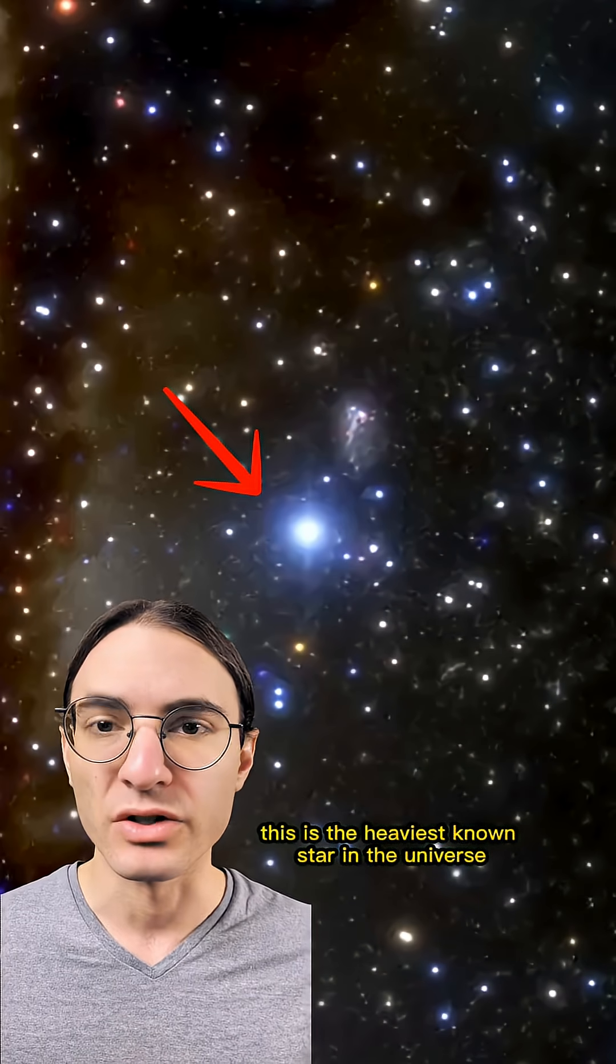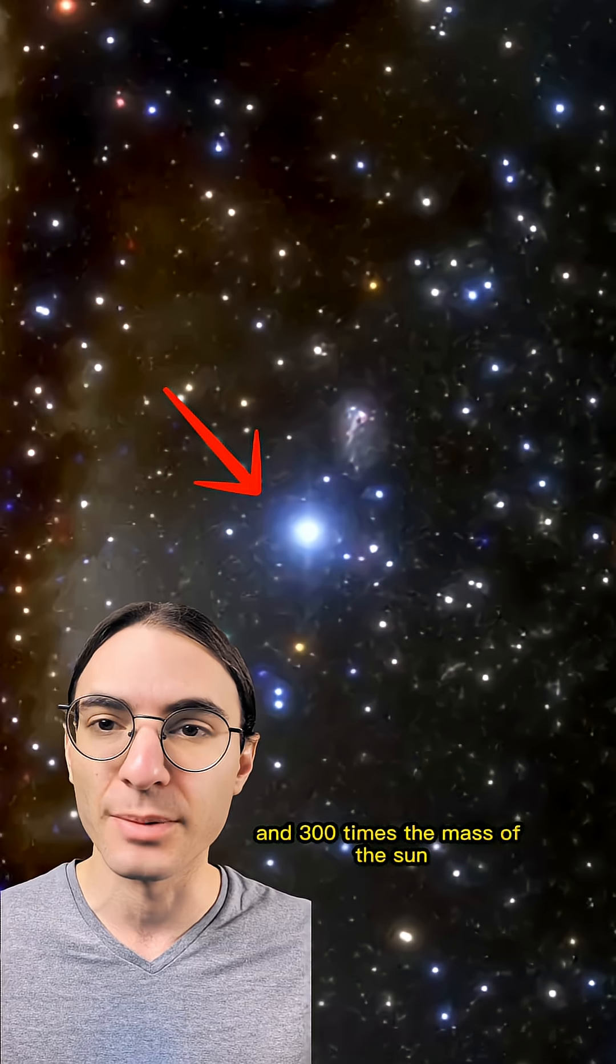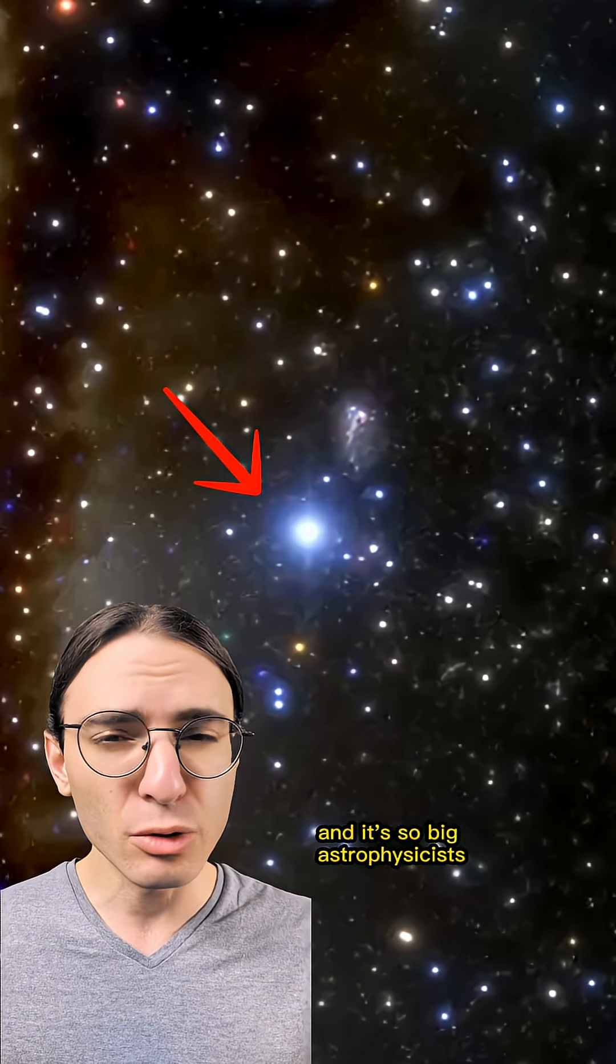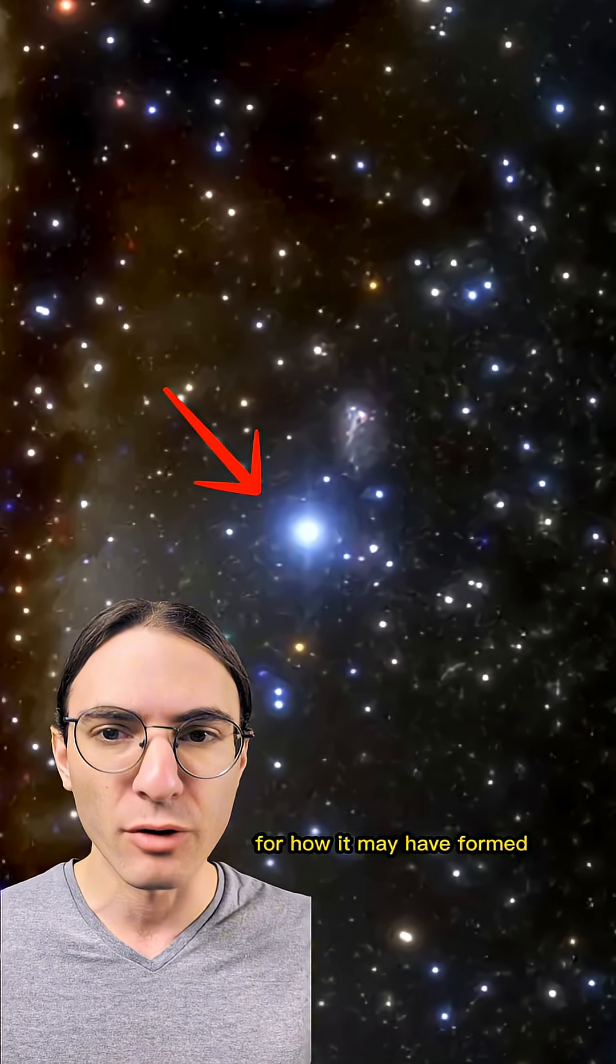This is the heaviest known star in the universe. Known as R136A1, it weighs somewhere between 200 and 300 times the mass of the sun. And it's so big, astrophysicists have had to come up with new explanations for how it may have formed.